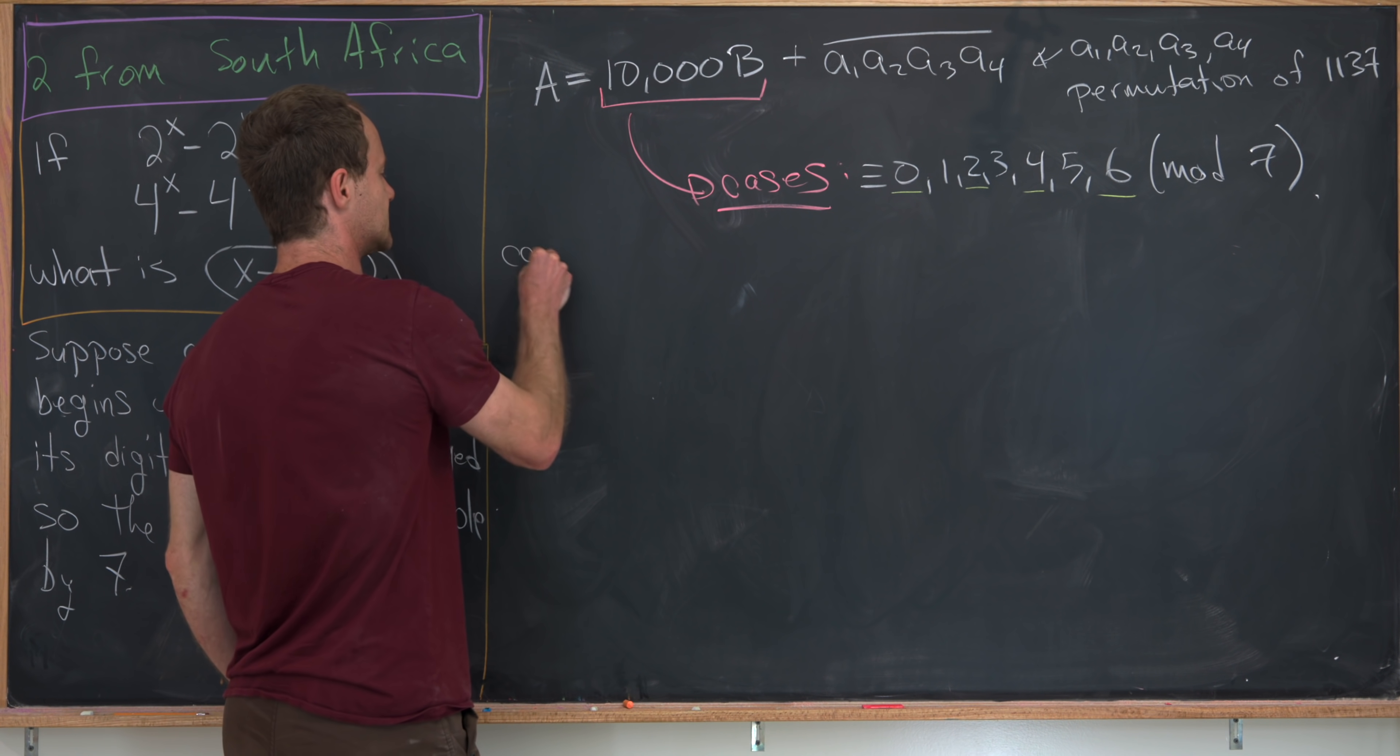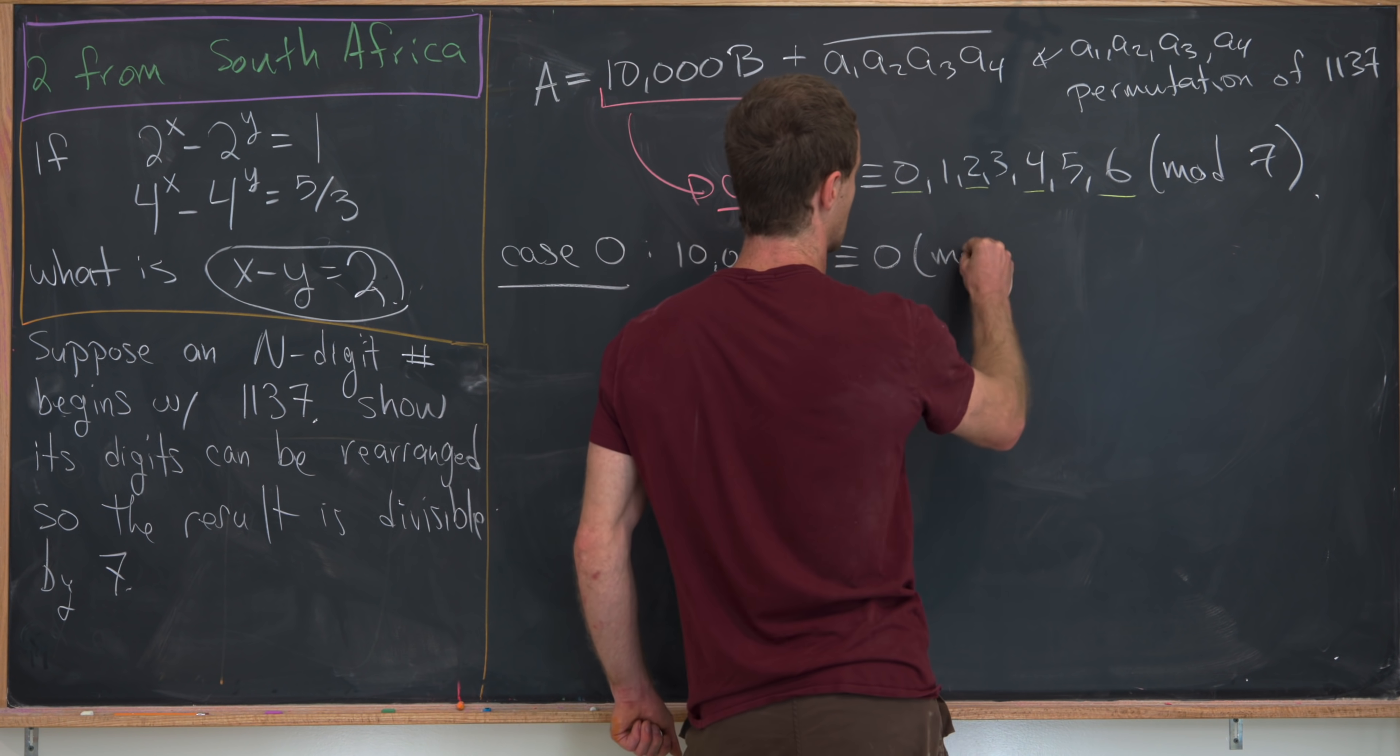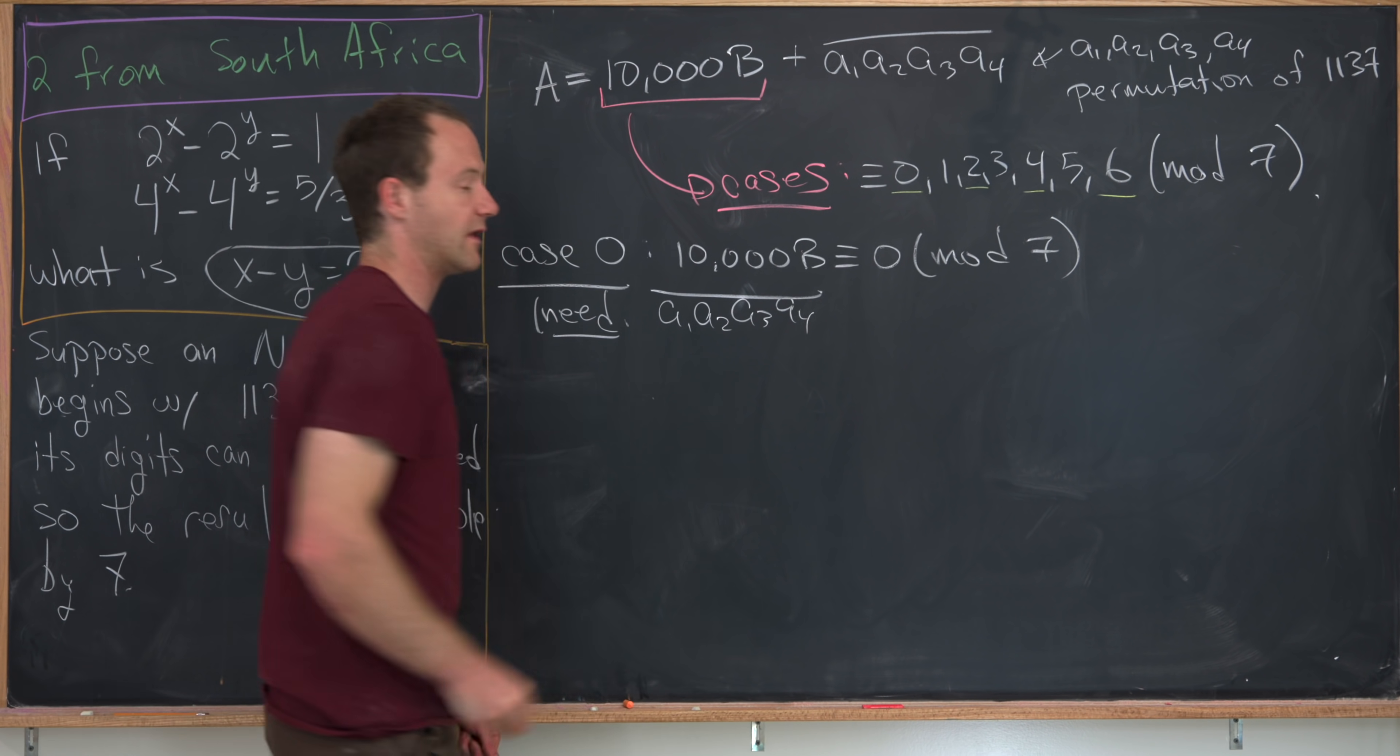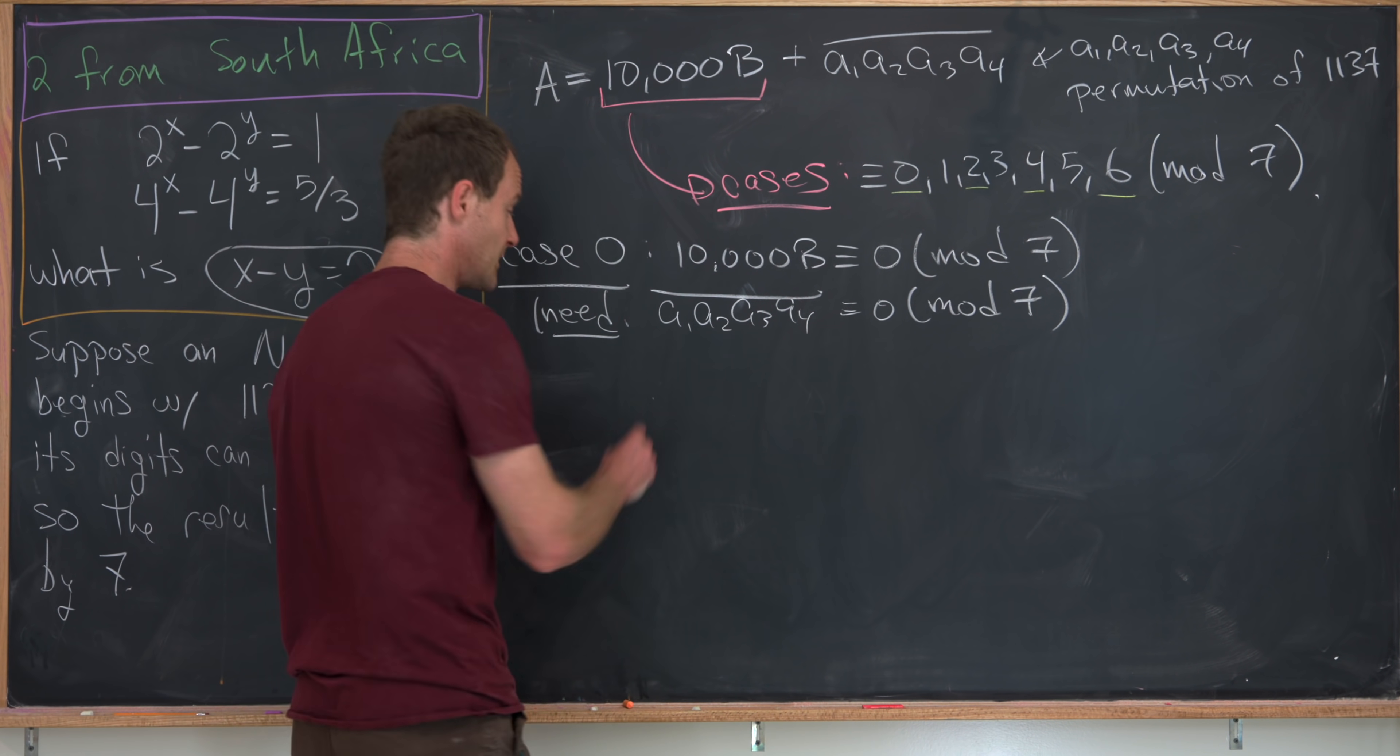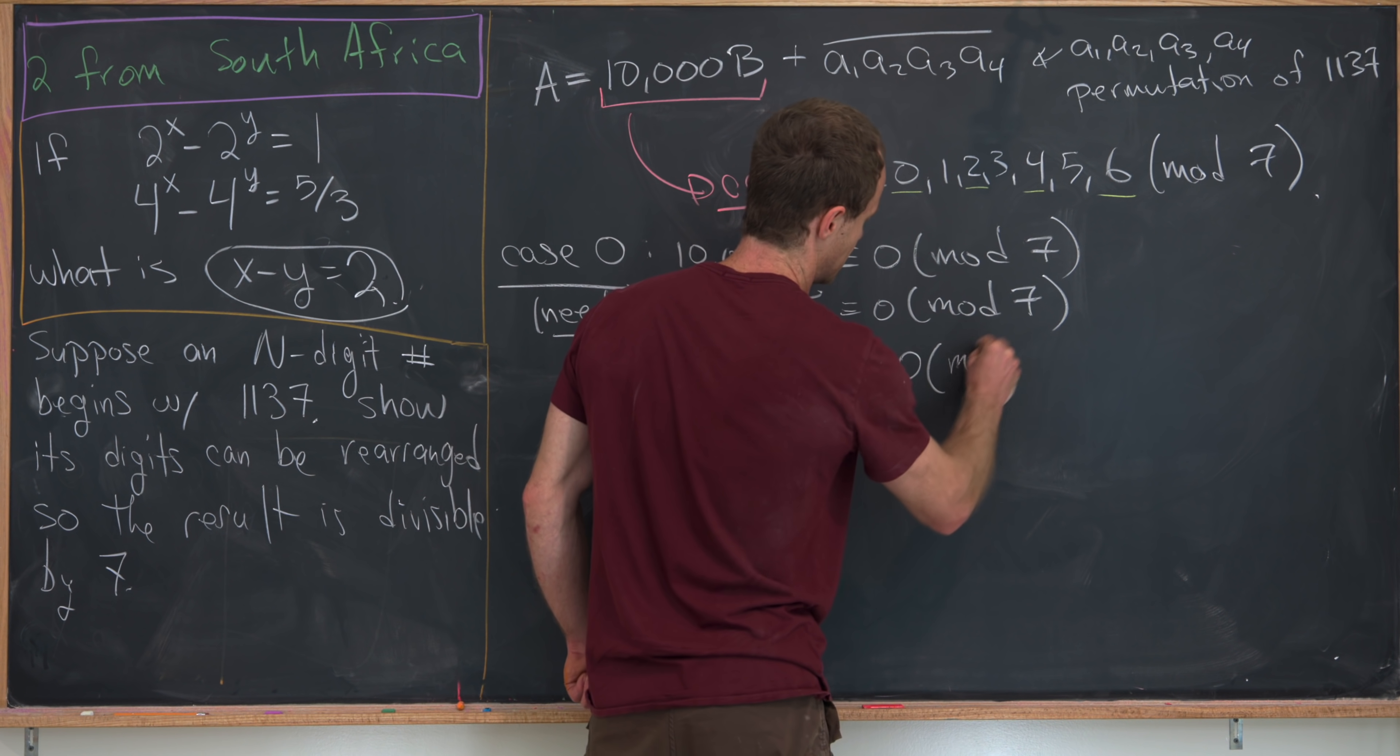Okay, so let's look at case number 0, which is when 10,000 b is congruent to 0 mod 7. So that means that we need all of the rest of this stuff, a1, a2, a3, a4, well, that number that's made up of those digits to also be congruent to 0 mod 7. So I think the best way to do this is just with trial and error. And what you'll end up seeing is that 3, 1, 7, 1 is congruent to 0 mod 7.